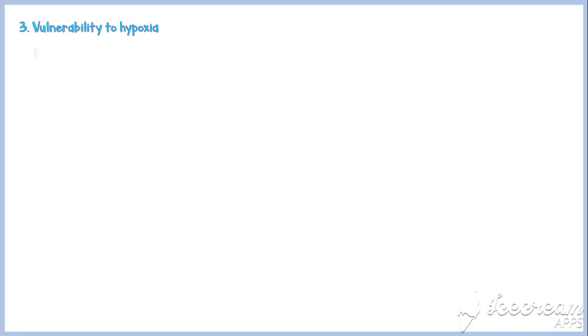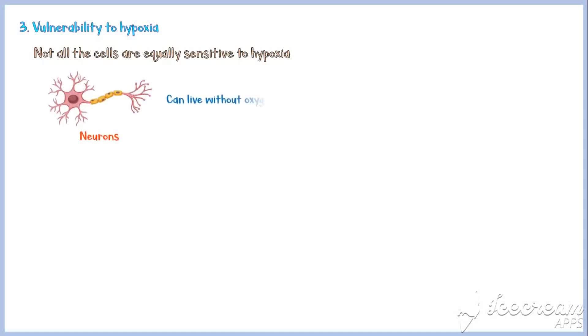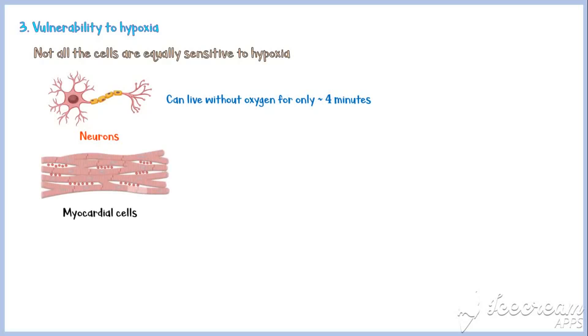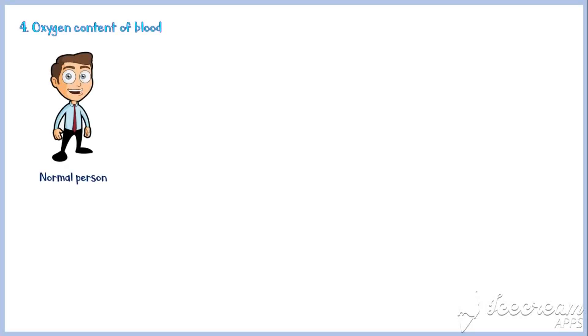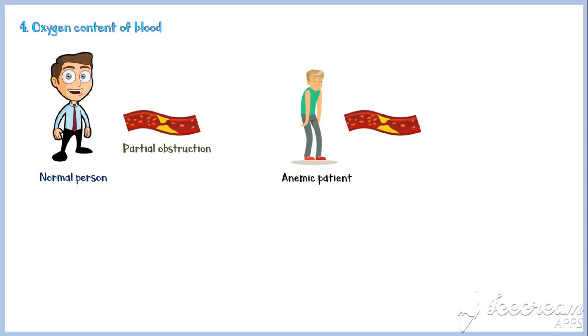Another factor is vulnerability to hypoxia. Not all cells are equally sensitive to hypoxia — neurons can live without oxygen for only about 4 minutes, whereas myocardial cells can live for about 20 to 30 minutes without oxygen, and fibroblasts can live for even hours without oxygen. The final factor is the oxygen content of blood. An anemic patient with partial obstruction of a vessel is more likely to develop infarction compared to an otherwise normal person with the same degree of occlusion.